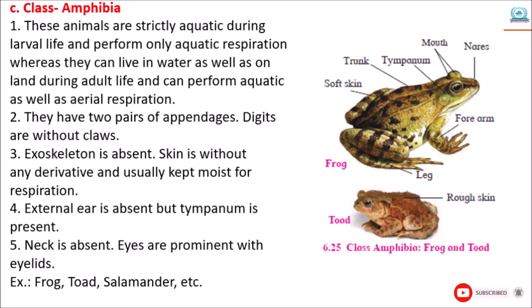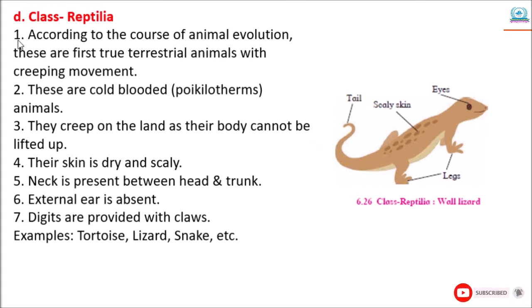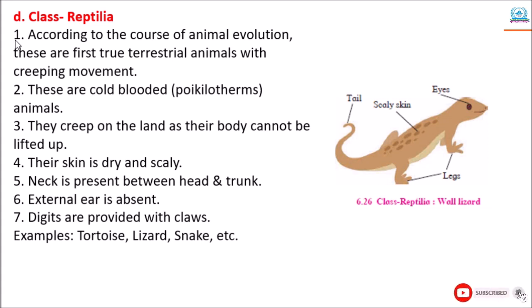The next class is Reptilia. According to the course of animal evolution, these are the first true terrestrial animals, with creeping movement. These are cold-blooded or poikilotherm animals. They creep on the land as their body cannot be lifted up. Their skin is dry and scaly. Neck is present between head and trunk. External ear is absent. Digits are provided with claws. Examples: tortoise, lizard, snake, etc.